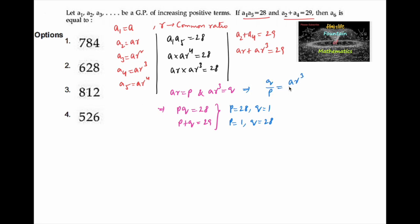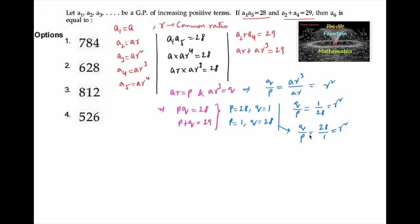Now q upon p is equal to ar³ divided by ar, which is equal to r². So q upon p is equal to r². In the first case, q upon p equals 1/28, which gives r² = 1/28. In the second case, q upon p equals 28/1, giving r² = 28.